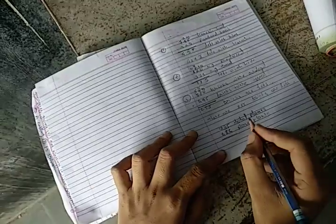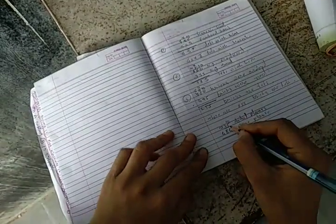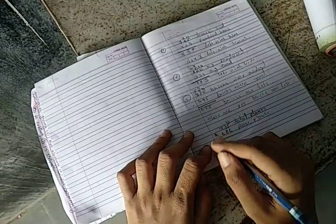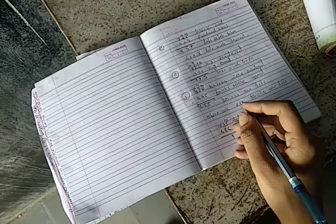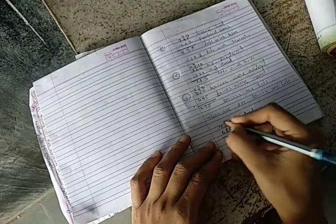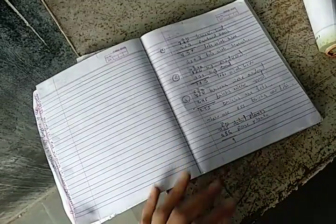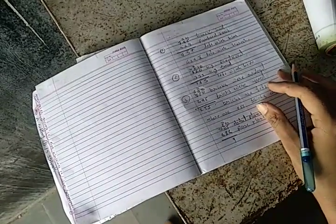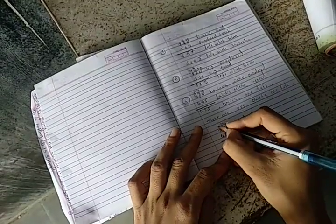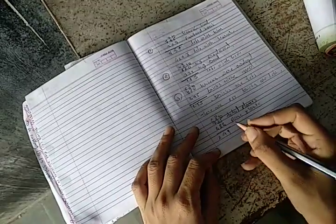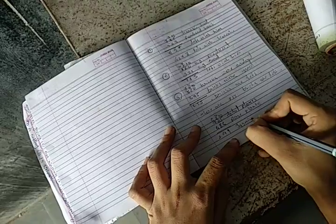5 mein se 6 nikale ga? Nai. So 5 ke upar 10. 10 and 5, 15. 15 mein se 6 nikale, toh kitni bachayenge? 9. 3 pe 2. 2 mein se 8 nikale ga? Nai. 2 pe 10. 10 and 2, 12. 12 mein se 8 nikale, toh kitni bachayenge? 4. 7 pe 6. 6 mein se 4 nikale, toh 2.